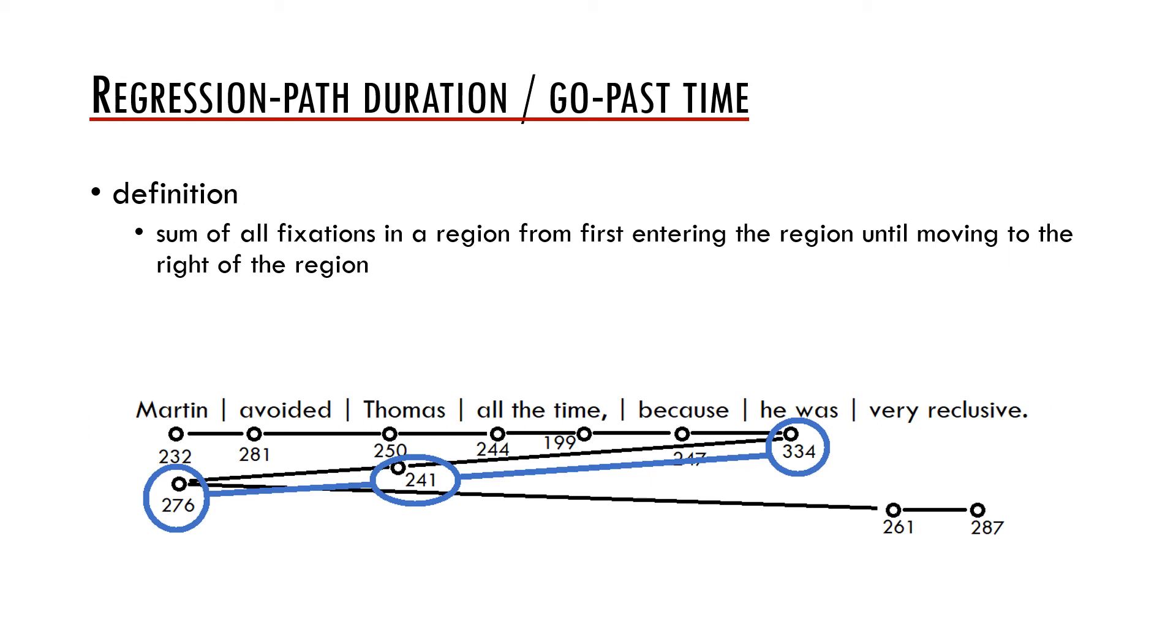Regression path duration is important because it is independent from other measures. It is the time needed to process the region before going further. For example, it is very informative in experiments targeting ambiguity solution.